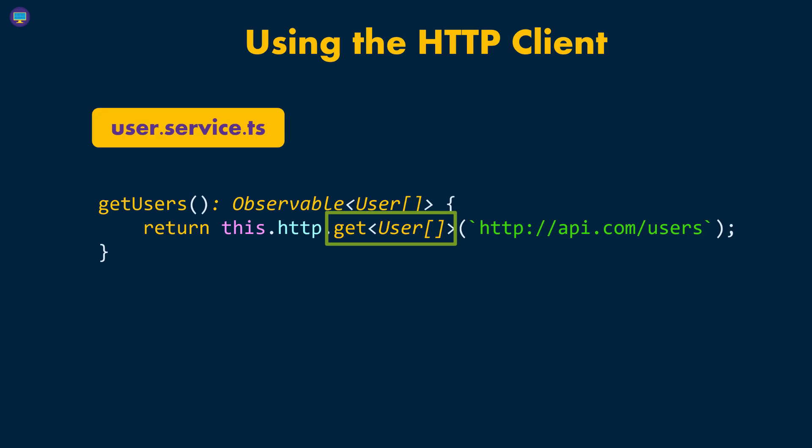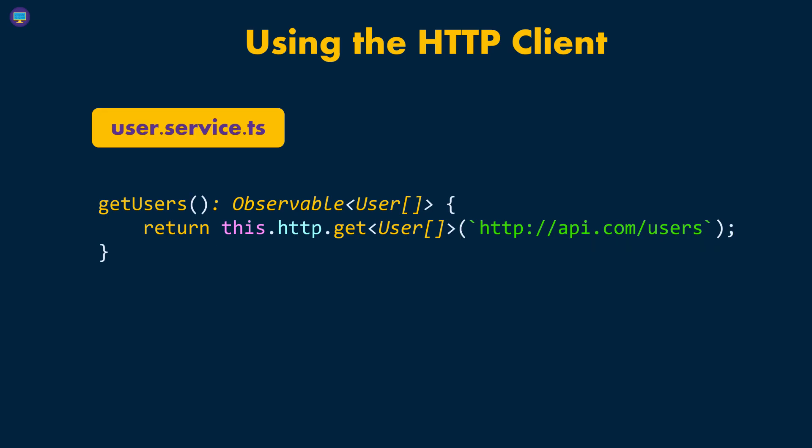We're passing in the type that we're expecting to get from the API — in our case, api.com/users. This API is going to return an array of users, so the same way we're telling the Observable that we're expecting an array of users, we also have to tell the get method, which is also generic, the type of data it's supposed to receive. The HTTP client will then deserialize the response and parse it as an array of users.